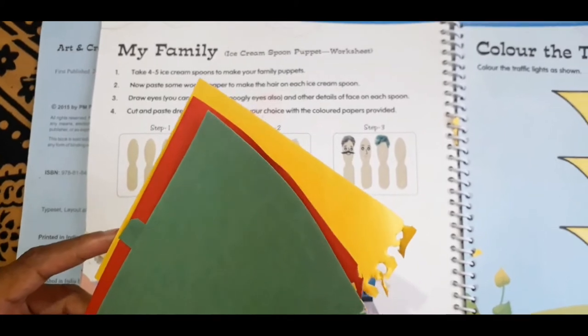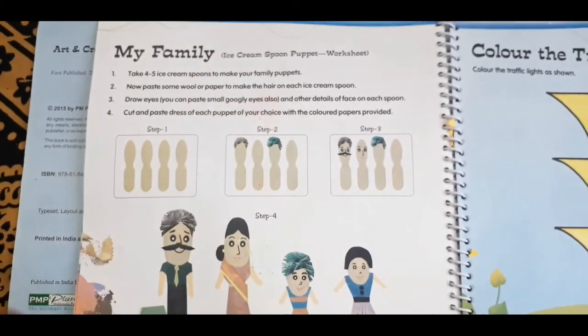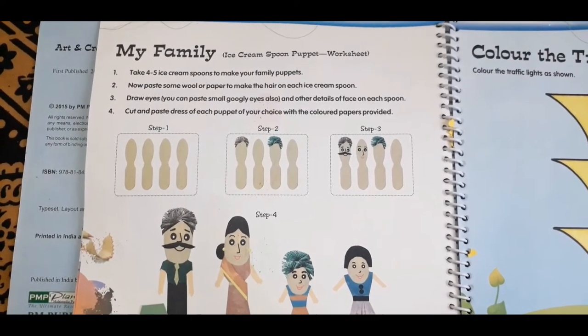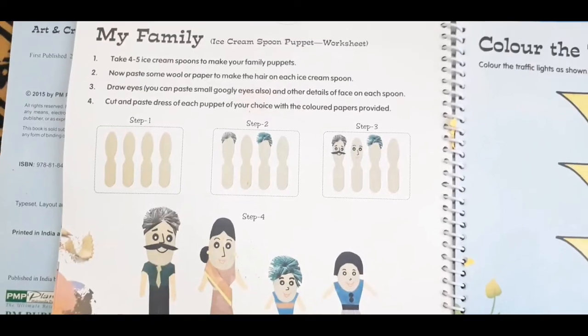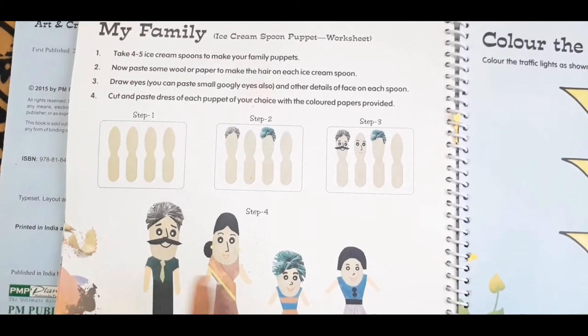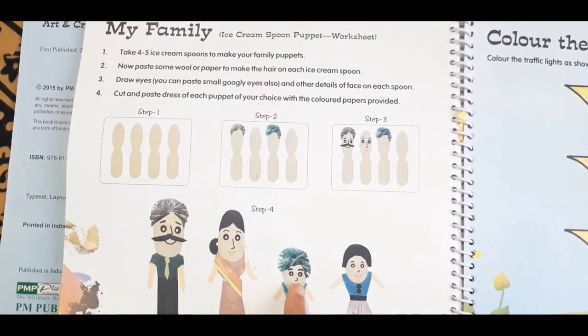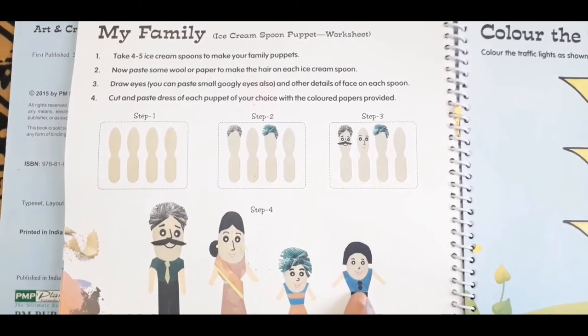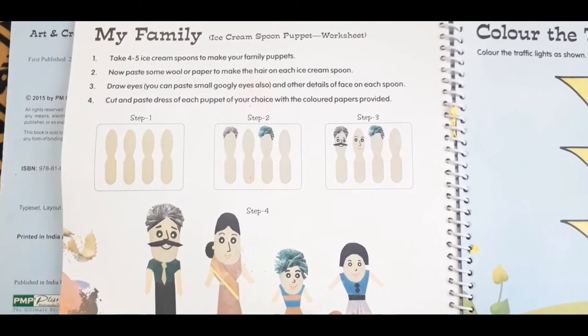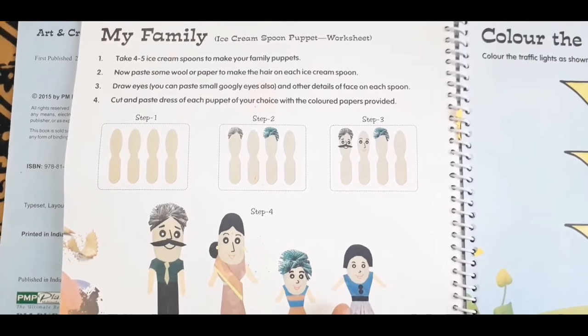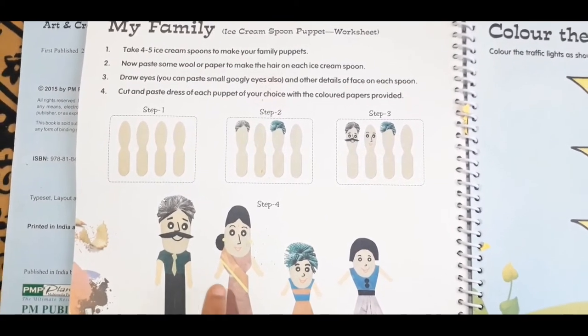Let's start our activity. There is papa puppet, mama puppet, brother puppet, and sister puppet. Which puppet you like the most you can make that puppet. It is not compulsory to make all four puppets.